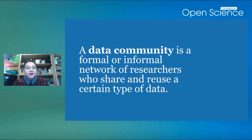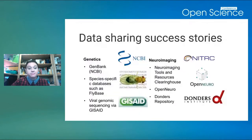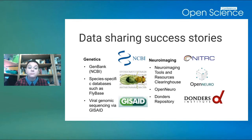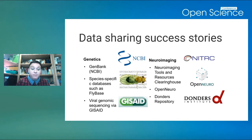Something all these examples have in common is that they involve the work of data communities — a formal or informal network of researchers who share or reuse a certain type of data. It's not the same thing as a discipline. What you'll find is scholars working from different disciplines coming together because they find the data in the repository particularly useful. Genetics is one area where this is particularly effective, with repositories set up for different kinds of model organisms, and GenBank as a large community with multiple smaller communities within it.